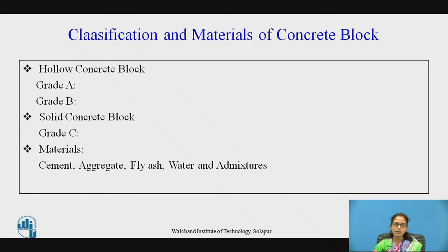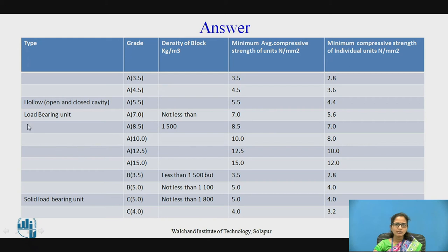The classification and materials of the concrete block: the concrete block consists of three grades. The hollow concrete block has Grade A and Grade B, and the solid concrete block is Grade C. Materials used are cement, aggregate, fly ash, water, and admixtures. Grade A is used as a load bearing unit; the block density used during manufacturing should be around 1500 kg/m³, and it is manufactured for a minimum average compressive strength of 3.5, 4.5, and 5 N/mm² respectively at 28 days.